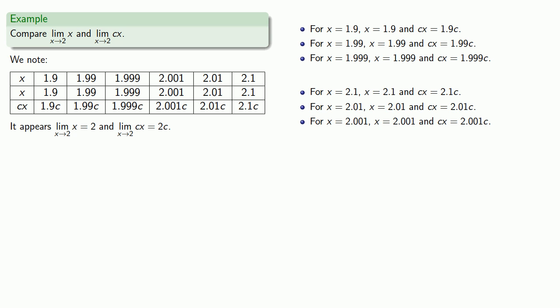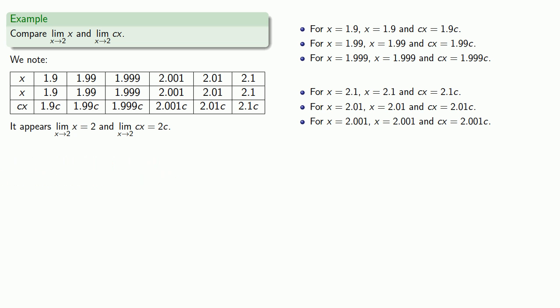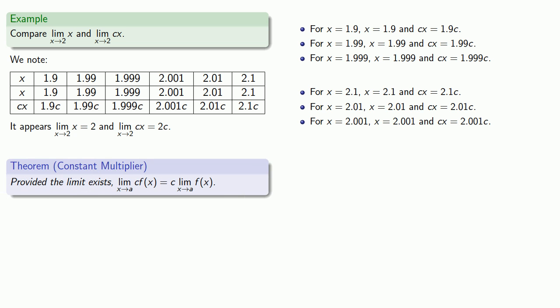Let's compile our data and find our limits. It appears that the limit as x approaches 2 of x is 2, and the limit as x approaches 2 of c times x is 2 times c. The effect of this constant is to multiply the limit by the constant. This suggests the following theorem: provided that the limit exists, the limit of a constant times a function is the constant times the limit of the function.